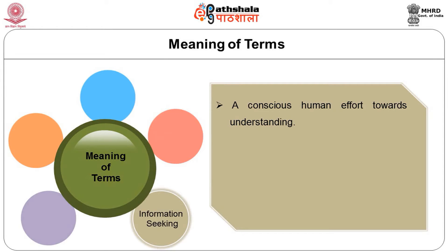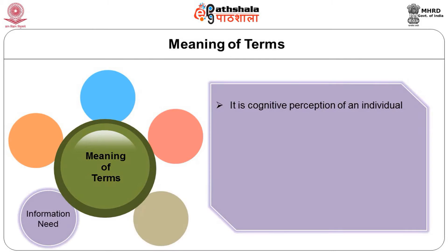Information seeking is a conscious human effort towards understanding a particular issue or a phenomena or an object. It may be a process in which humans purposefully engage themselves in updating their knowledge — a conscious effort to acquire information in response to a need or in response to a gap in one's knowledge. Information need is a cognitive perception of an individual and cannot be directly accessible to an observer. The experience of the need can be discovered only by deduction from behavior or through the reports of the person in need of information.